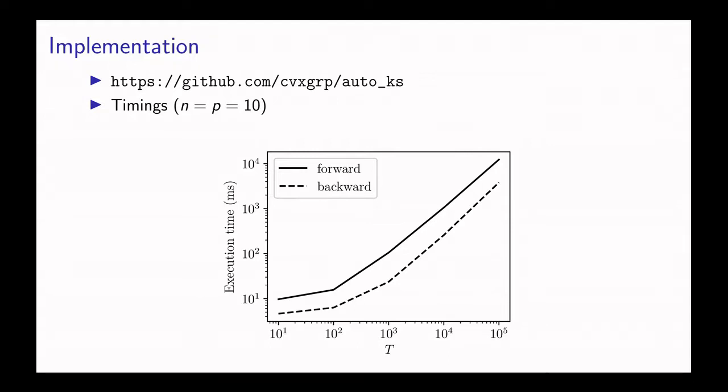Here we show a simple example of running our code to both perform Kalman smoothing and then also take the gradient of Kalman smoothing for an artificial example where n and p are both 10, so the number of states and number of measurements are both 10. We do this for varying values of the horizon T, all the way from 10 to 100,000.